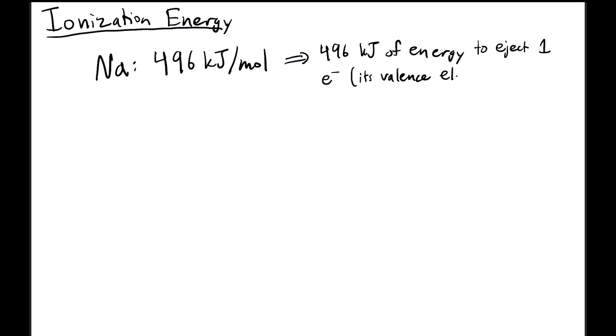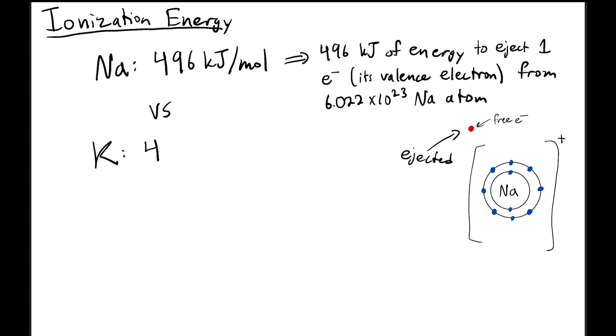This idea is also reflected in the ionization energy of sodium and potassium. The ionization energy of sodium is 496 kilojoules per mole, meaning it takes 496 kilojoules of energy to ionize one mole of sodium, that is, eject one electron from each sodium atom. Potassium, on the other hand, has an ionization energy of 419 kilojoules per mole, substantially lower than that of sodium.